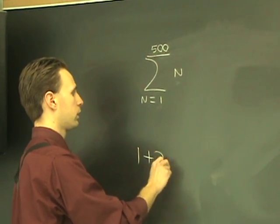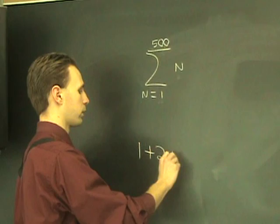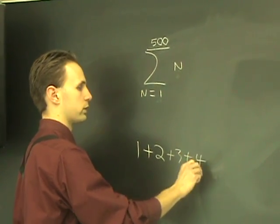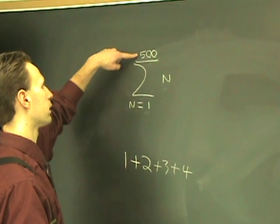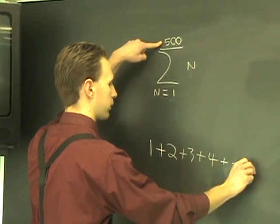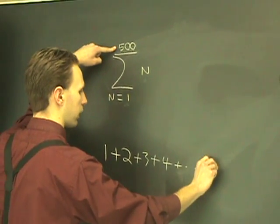When n is 1, this thing is 1. So you just write 1. Plus, after doing that, you increment this by 1. So the next number is 2. And then you increment it again, and you get 3, 4, etc. Well, where do you stop? You stop when n reaches this number here. So, plus, we just write on and on and on, up to 500.